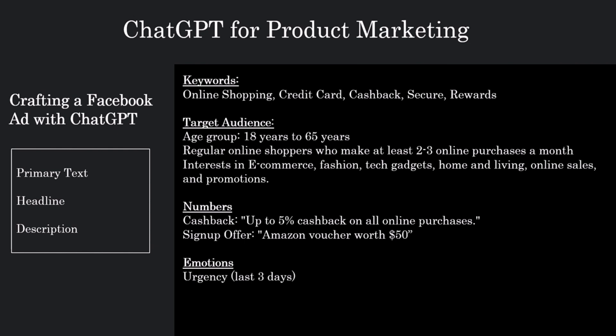For platforms like Facebook, there are often optimal lengths for the ad copy. If you want to adhere to these or have your own length preferences, specify them. In our case, the primary text should span a maximum of one to three lines. Similarly, there are specific guidelines for headlines and descriptions as well. If you are creating an ad for Facebook, refer to Facebook's guidelines and indicate the desired text length. If you are running a LinkedIn or Instagram ad, consult their guidelines and provide the necessary information regarding the length of the text you require.